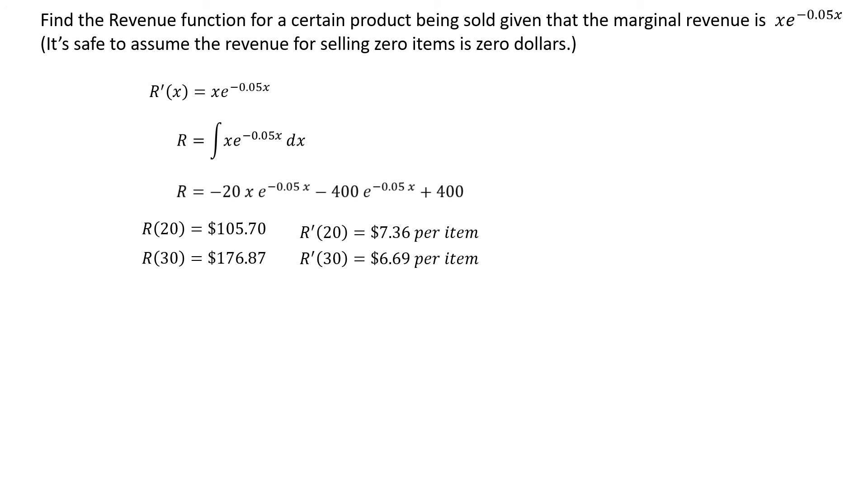These are not the revenues at the sales level of 20 and 30. These are the rates at which the revenue is changing at those levels. So in summary, revenue is the amount of money you'll make and marginal revenue is the rate per item at which your revenue is changing at any given sales level.